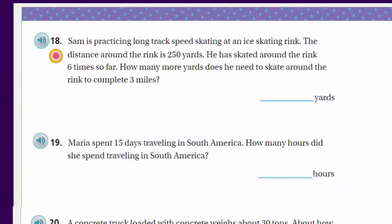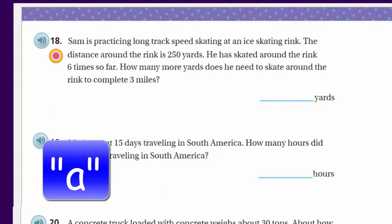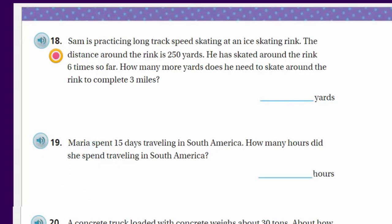It says that Sam is practicing long track speed skating at an ice skating rink. The distance around the rink is 250 yards. He has skated around the rink 6 times so far. How many more yards does he need to skate around the rink to complete 3 miles? So, we're dealing with 2 units of measure here. We're dealing with the yards. The 250 yards is the distance around the rink. He's done that 6 times. Nice. It says here, though, we would need to find out how many more yards would he have to skate to make the 3 mile mark. So, I see this is a multi-step problem. First, we would need to know how much he's skated around the rink so far. So, we'll go ahead and take our 250 and multiply it by 6 to get our total yards. Okay, and that's 1,500. And I'm going to write that right over here.